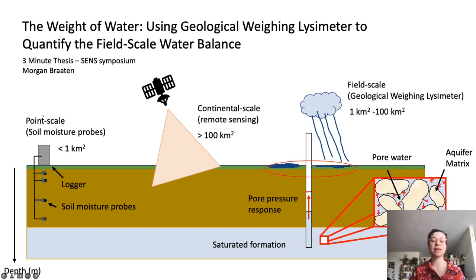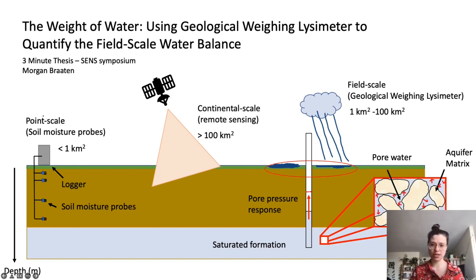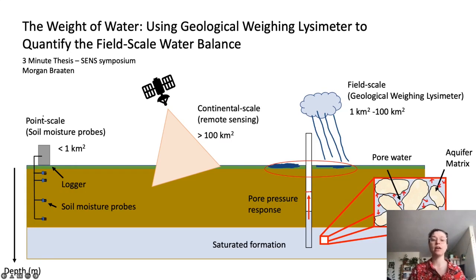Accurate field scale measurements that represent both spatial and temporal patterns of water storage are needed. However, current measurement techniques are often constrained to certain scales and hydrological fluxes. Take soil moisture, for example. It's typically measured using point scale measurements, which provide high-resolution information, but need large observation networks to represent field scale moisture. This is often time-intensive and costly. Alternatively, large-scale continental measurements provide coarse spatial averages, but it's often difficult to extract smaller-scale soil moisture.